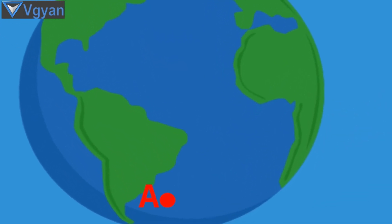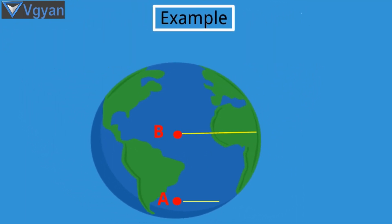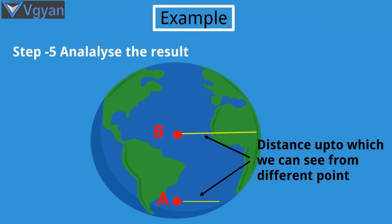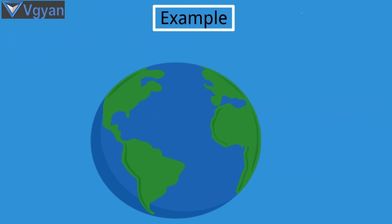Let's say first we have observed from point A, then we have observed from point B. After observing or performing our test, we have to analyze our results. On analyzing our results, we have found that our hypothesis is correct, that is, earth is round.